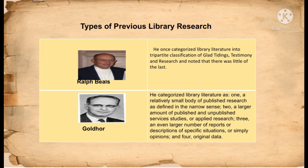Next is types of previous library research. Ralph Bills categorized library literature into a tripartite classification of glad tidings, testimony, and research, and noted there was little of the last. Also, Goldlore categorized library literature as: one, a relatively small body of published research as defined in the narrow sense; two, a larger amount of published and unpublished survey studies or applied research; three, an even larger number of reports or descriptions of specific situations or simply opinions; and lastly, original data.